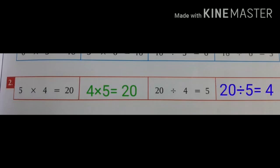Which is the second division fact? Yes, 20 ÷ 5 = 4. So observe the two multiplication facts and the two division facts of the same numbers.